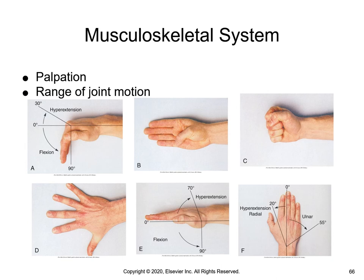For musculoskeletal range of motion, refer to table 30.32 in your textbook. Looking at the figures of the hands: A is range of motion of the hand and wrist — metacarpophalangeal flexion and hyperextension; B is finger flexion, thumb to each fingertip to the base of the little finger; C is finger flexion, fist formation; D is finger abduction; E is wrist flexion and hyperextension; and F is wrist radial and ulnar movement.